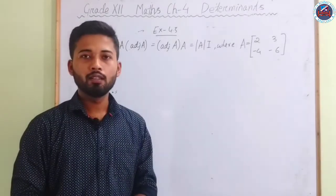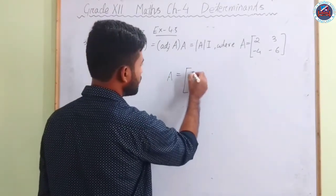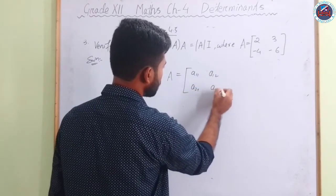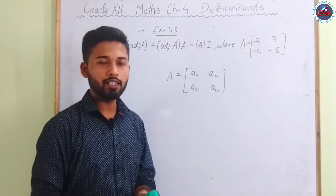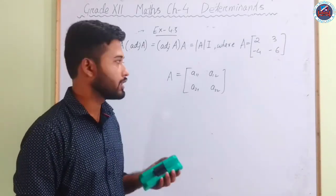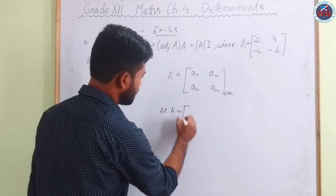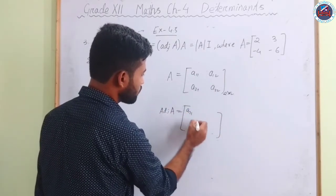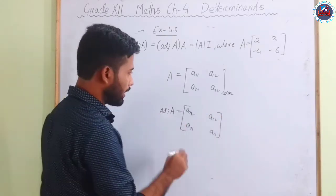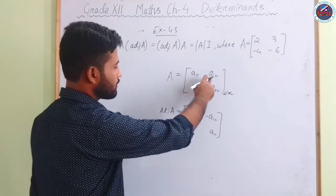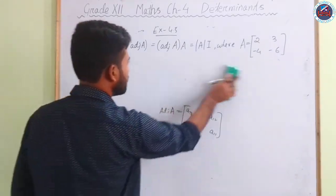There is a shortcut to find the adjoint of a 2×2 matrix [[a₁₁, a₁₂],[a₂₁, a₂₂]]: simply interchange a₁₁ and a₂₂ — bring a₂₂ to the top-left and a₁₁ to the bottom-right — and change the signs of a₁₂ and a₂₁. We will use this trick going forward.